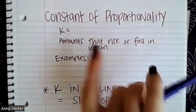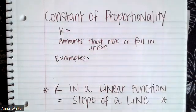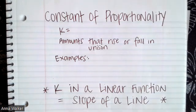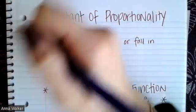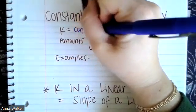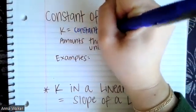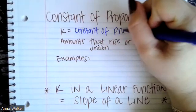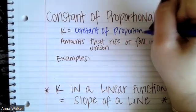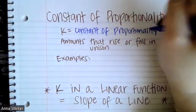So constant of proportionality is a very long term, three words that are kind of long. So a lot of times in math, we use different words, we represent them with different letters, just like how we represent unknowns with different letters. So in math, the constant of proportionality can be represented with the letter K. So K is equivalent to this constant of proportionality.